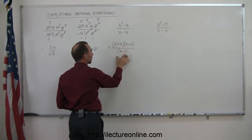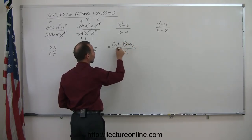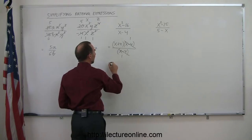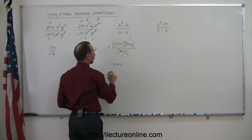And then you realize, ah, I have an x minus 4 in the numerator, I have an x minus 4 in the denominator, I can cancel those out. There comes 1 and 1. And so this is equal to simply x plus 4.